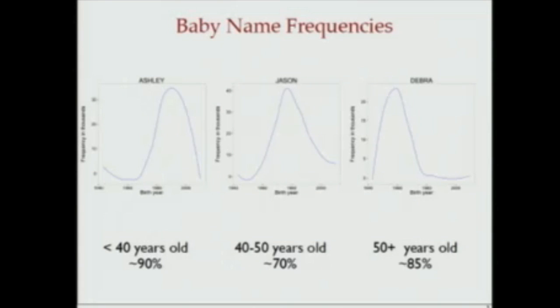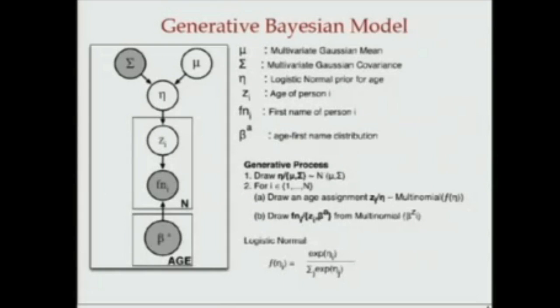We can make use of this interesting signal in the first name by using a generative model, which looks kind of complicated. But there are two reasons generative models are really useful for this problem. One is that they provide a powerful framework to incorporate the Social Security baby name frequency statistics in the model to estimate without requiring any labeled datasets, supervision, or training. The second is that this model enables predictions both at the individual level as well as at the population level. The only input to this model is a list of first names, and the output is individual-level predictions for each person as well as population-level predictions.